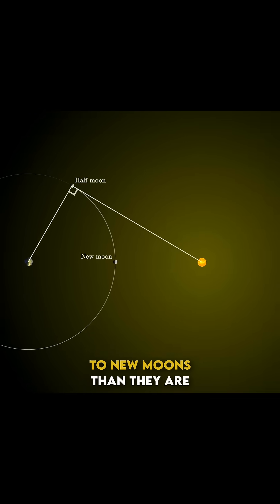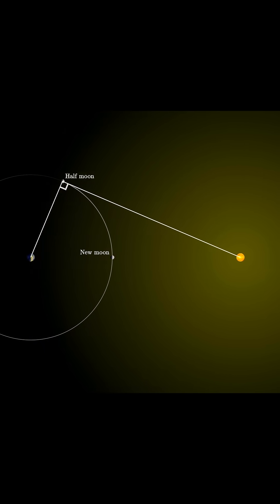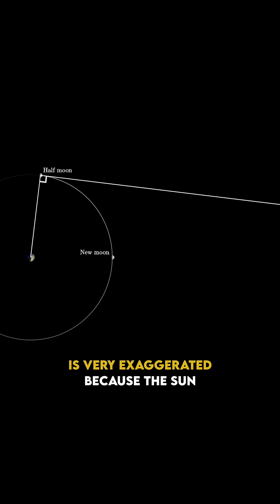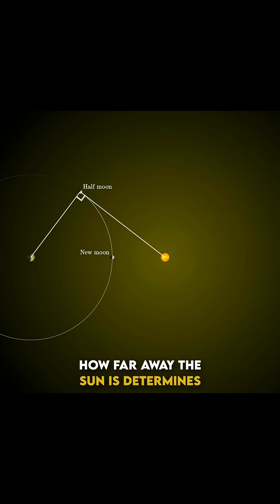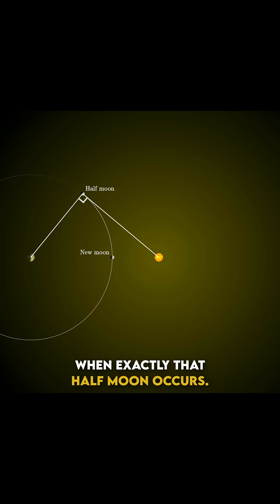Half moons are slightly closer to new moons than they are to full moons. Of course, in this graphic, the effect is very exaggerated because the sun is being drawn so close to the Earth. How far away the sun is determines when exactly that half moon occurs.